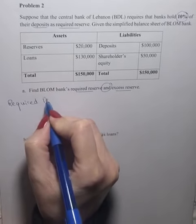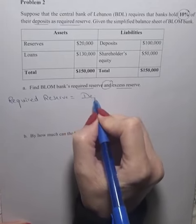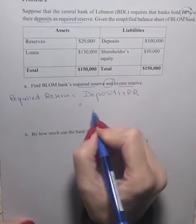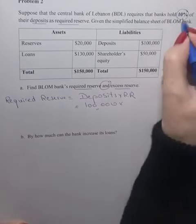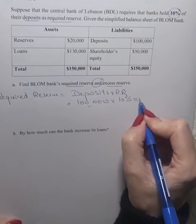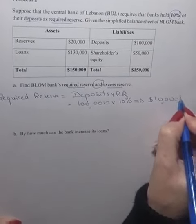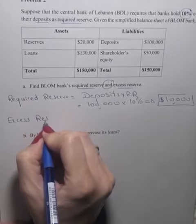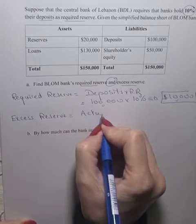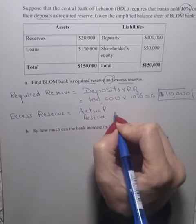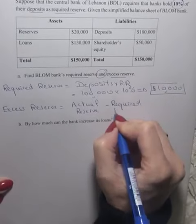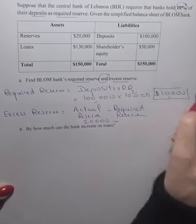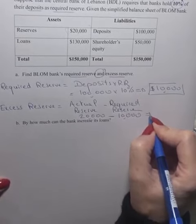Required reserve equals deposits times RR, which equals 100,000 times 10%, giving $10,000. The excess reserve equals actual reserve minus required reserve, which is 20,000 minus 10,000, equaling $10,000.